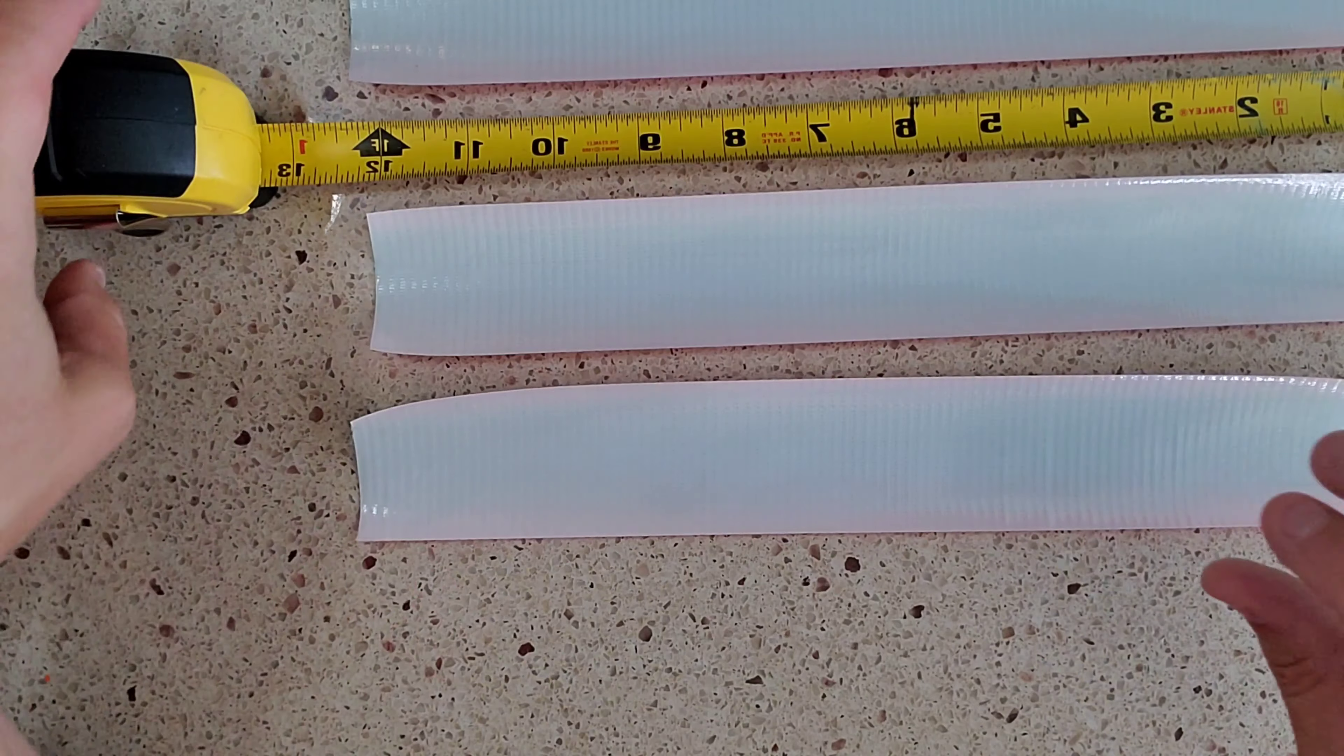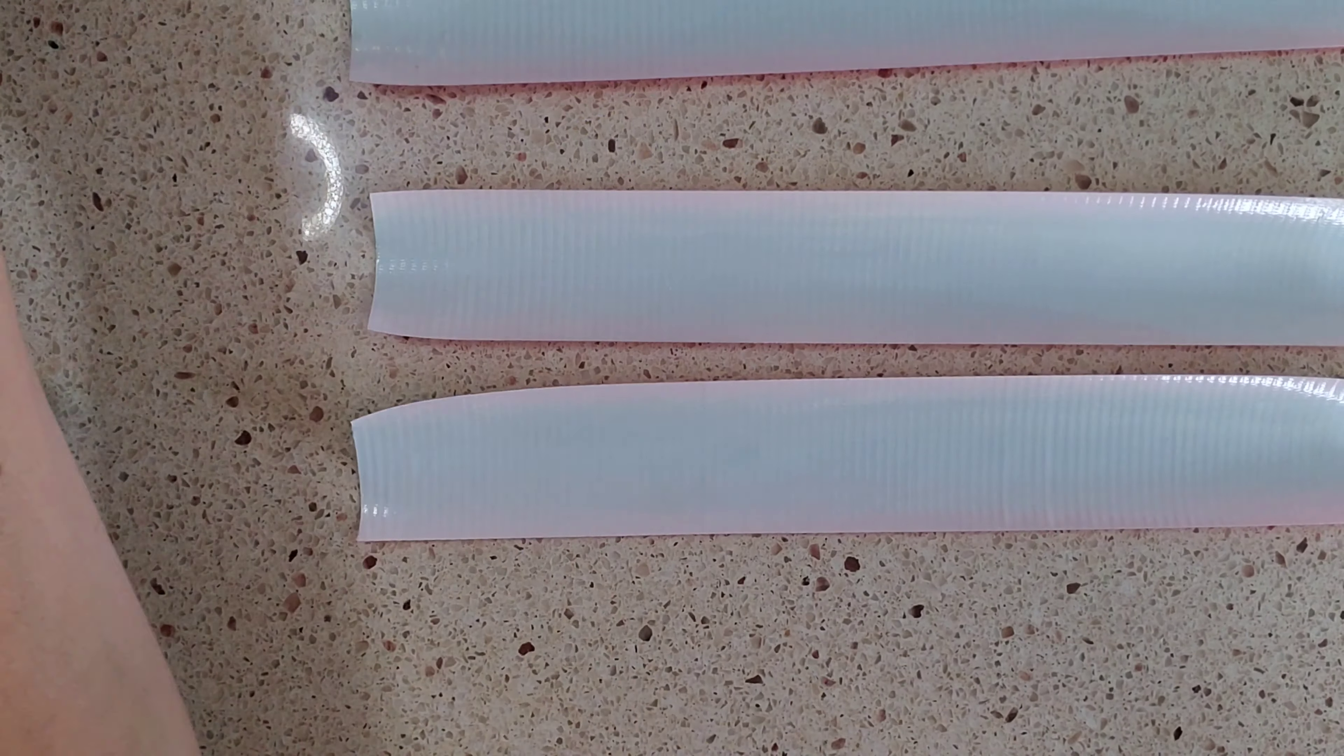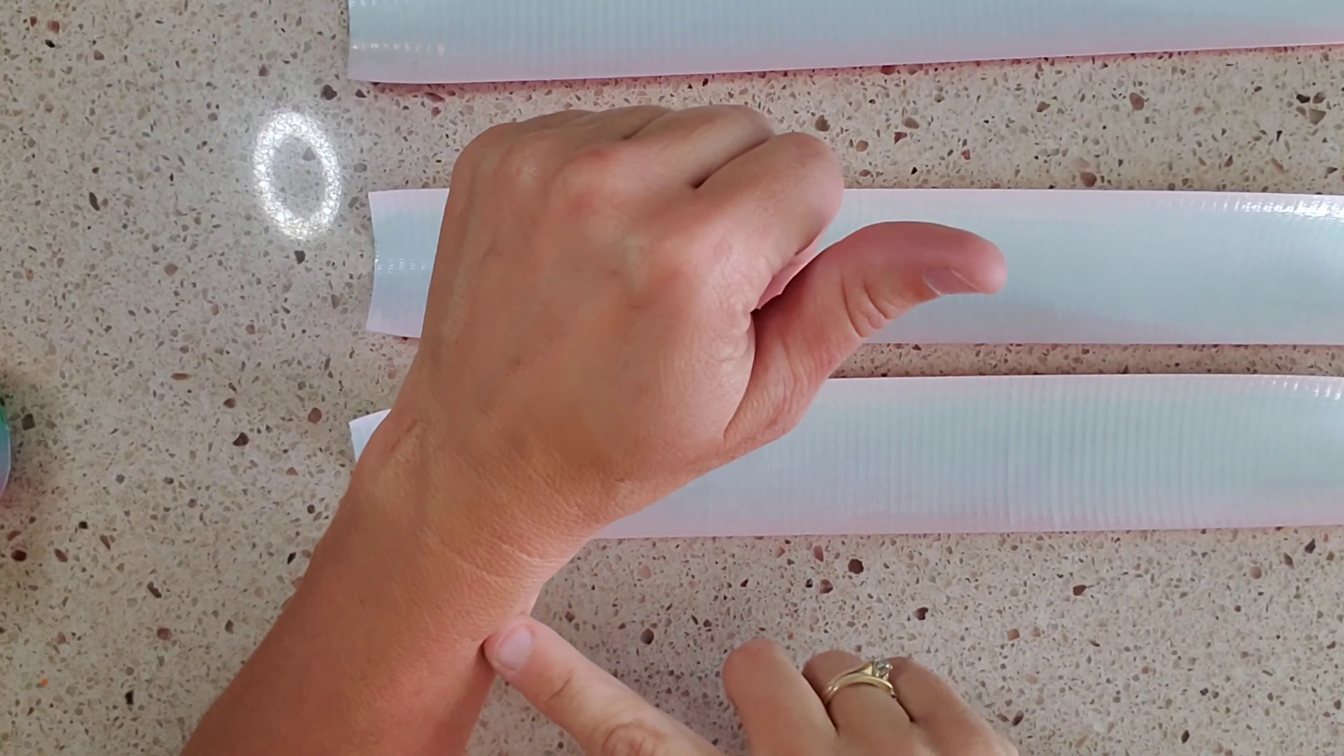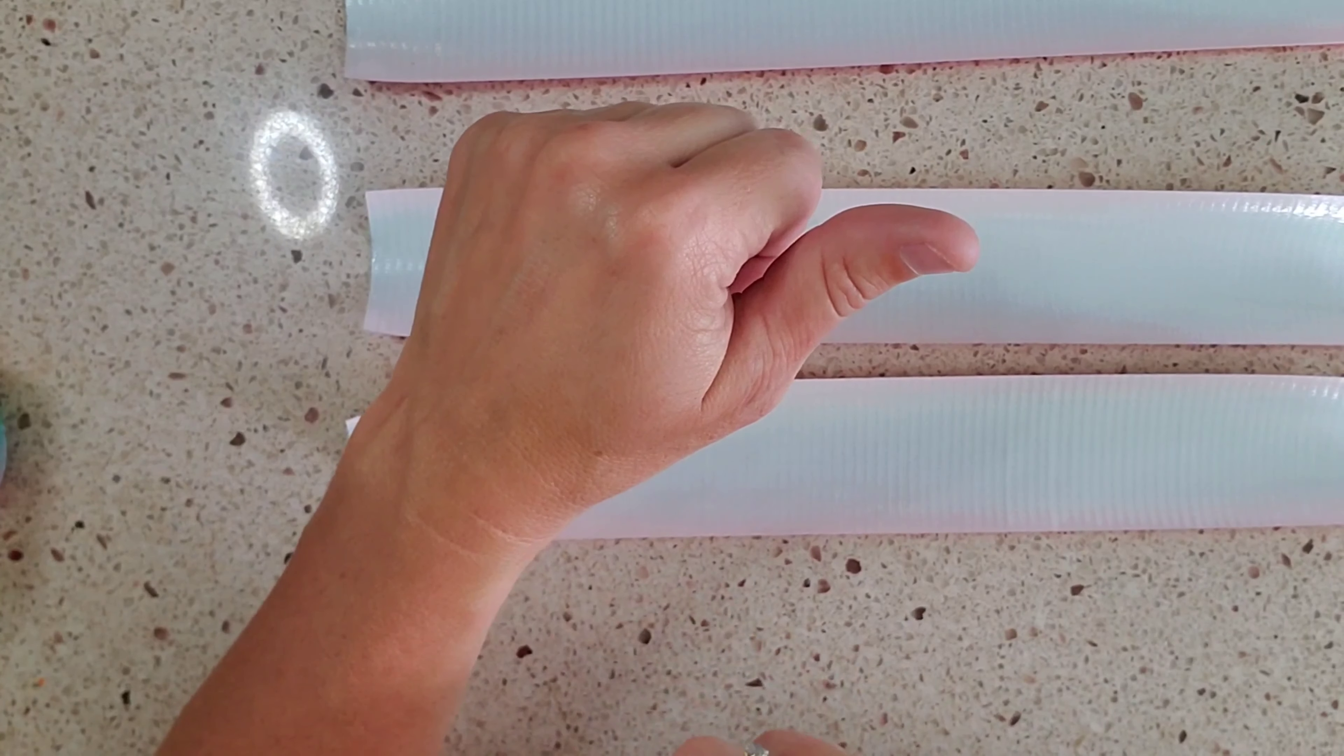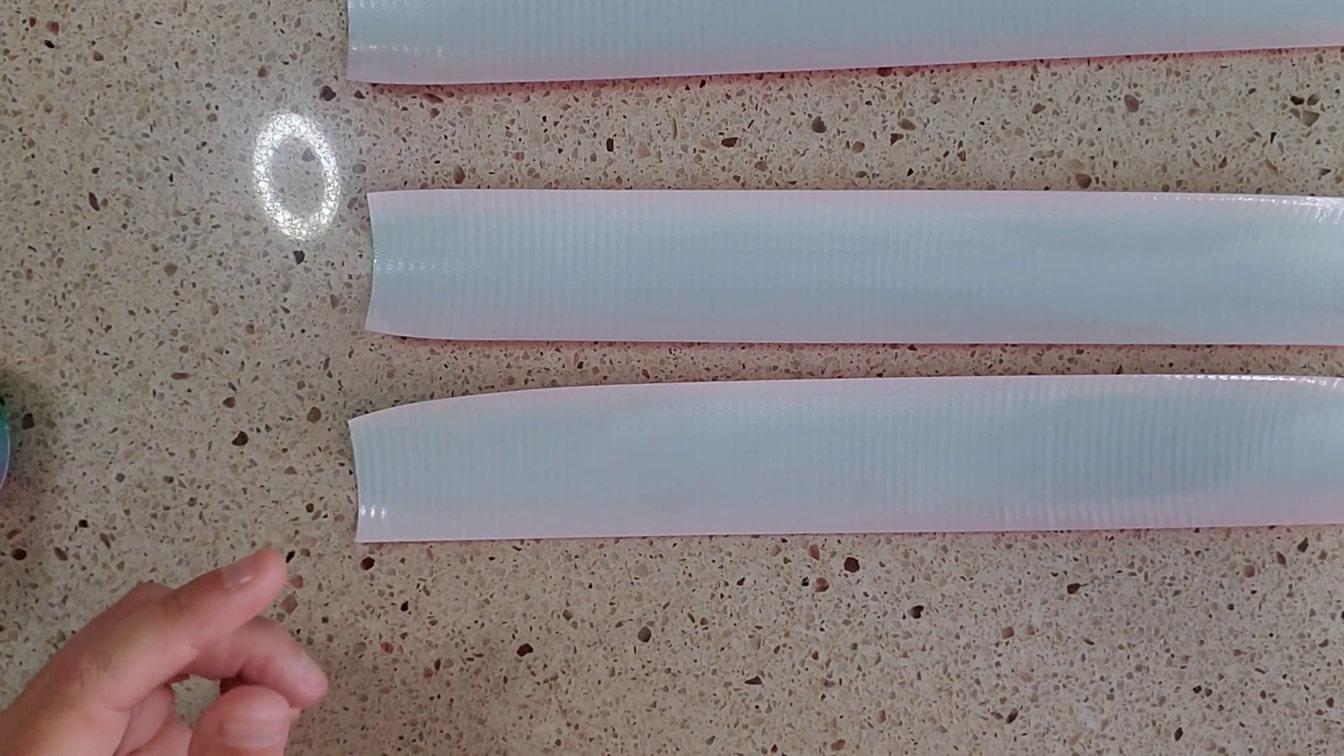Once you have your three pieces cut that are twelve inches, if your wrists are six inches, again if your wrists are seven inches you would do fourteen. If your wrists are eight inches then you would do sixteen and so forth and keep adding on.